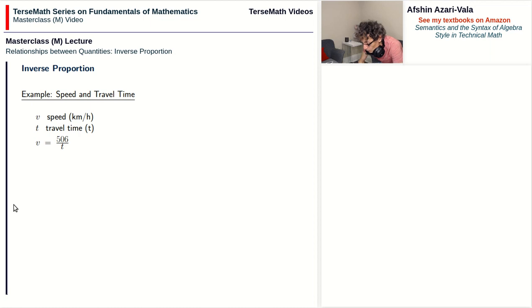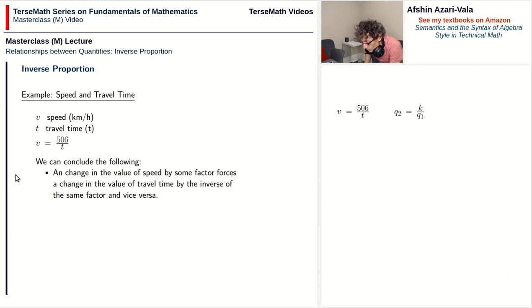Now this equation has the form of inverse proportion problems. Here q2 is v, k is 506, q1 is t. And because I can tell that the relationship between v and t is inverse proportion by just looking at it, I can make the following conclusions very quickly.